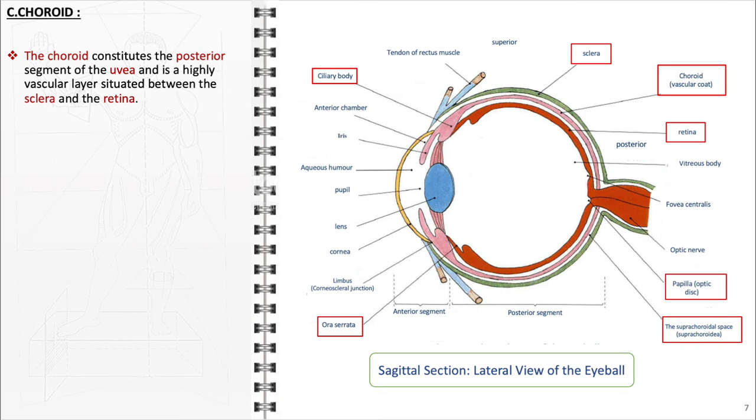Lastly, addressing the final component of the uveal tract, the choroid forms the posterior segment. This highly vascular membrane is strategically positioned between the sclera and the retina, playing a crucial role in ocular nutrition.